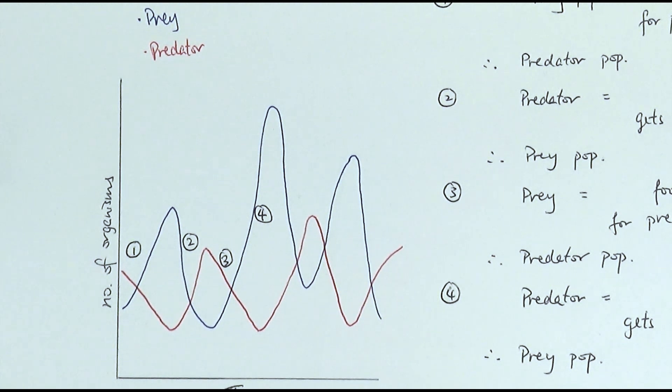And then secondly, what does it mean, and then thirdly, how does it affect the other population size. So largely split into three separate points in terms of the explanation bit or the description bit.